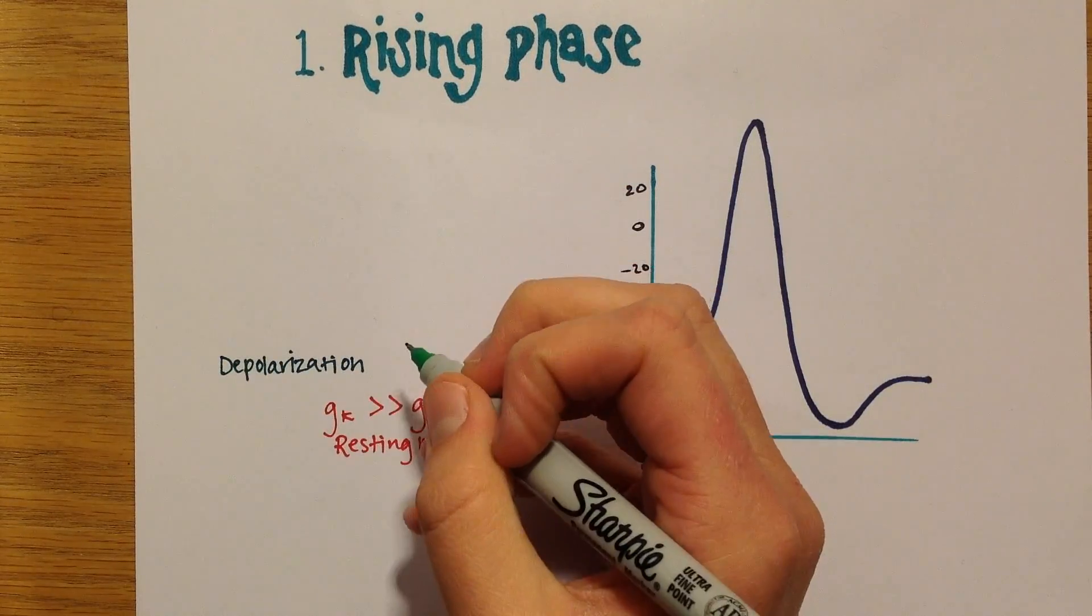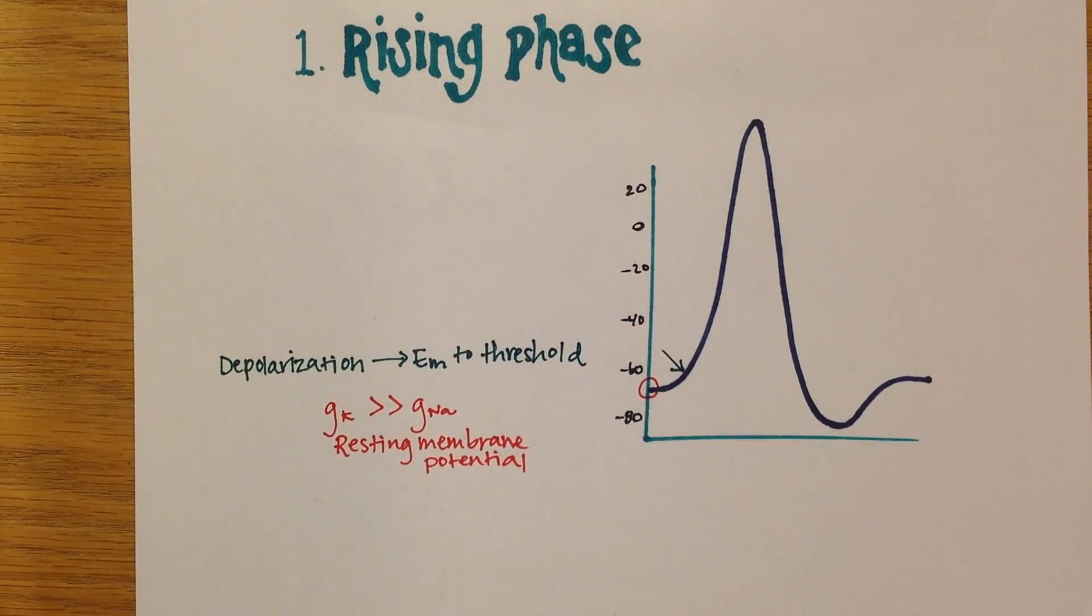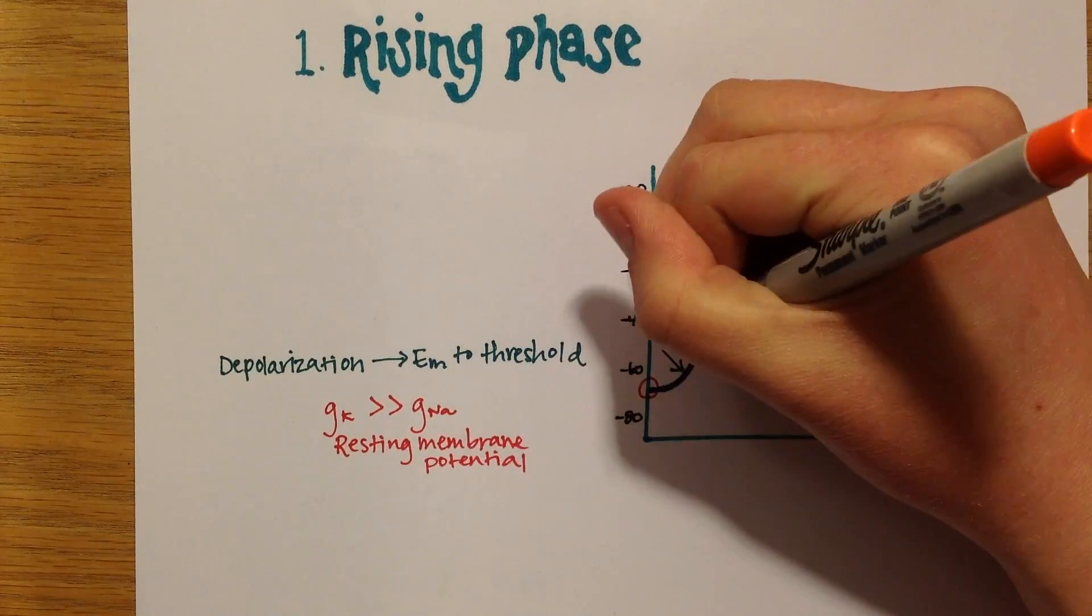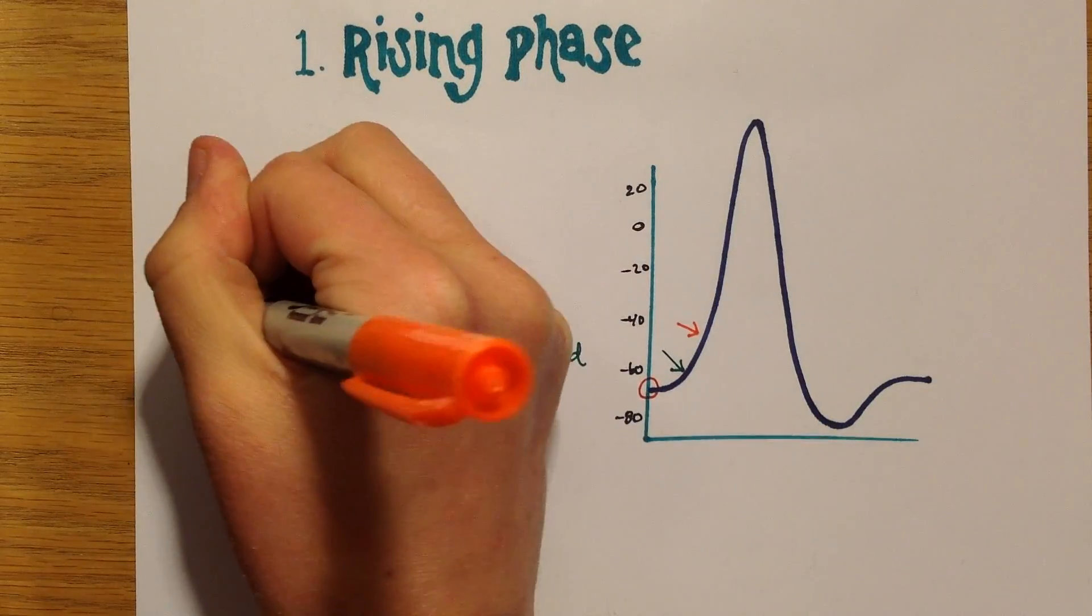Then a depolarizing event occurs to bring the membrane potential to threshold. Once threshold is reached, voltage-gated channels for both sodium and potassium open.